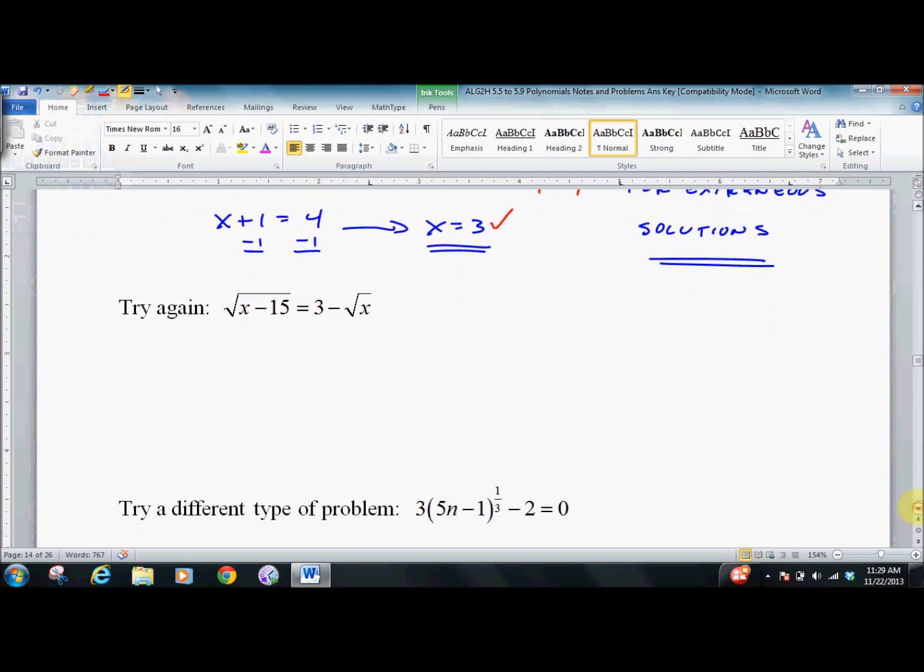That's the easy problem. Slightly more challenging. Squaring both of these sides. Remember that 3 minus root x, you can't just square each piece.